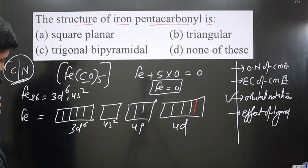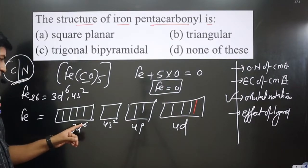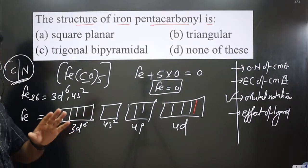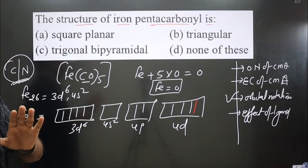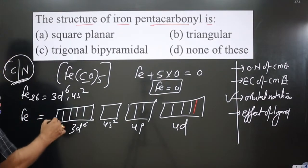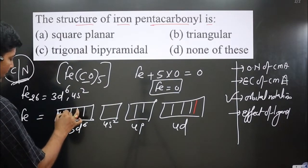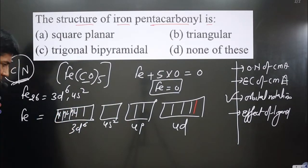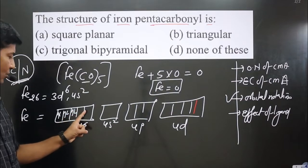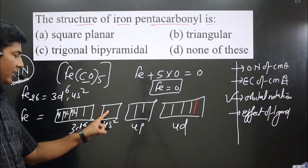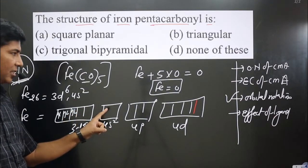Now if a strong field ligand is there, pairing of electrons will be taking place. So when we fill these electrons in these orbitals, we have to do pairing. We do not follow Hund's rule – two electrons, four electrons, and six electrons are there.